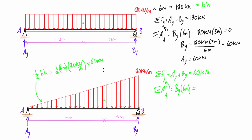Solving for B_y: 60 kilonewtons times 4 meters divided by 6 meters gives 40 kilonewtons, positive, so it's pointing up. Bringing that back into the force equation, A_y equals 60 minus 40, so A_y equals 20 kilonewtons pointing up.